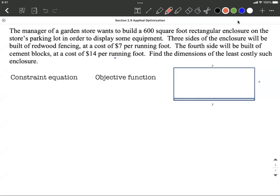Let's try an applied optimization problem. On this one, a garden store wants to build a 600 square foot rectangular enclosure on the store's parking lot in order to display some equipment. We know three sides of this enclosure will be built from redwood fencing at a cost of $7 per running foot. The fourth side is going to be cement blocks at $14 per running foot. Our goal is to find the dimensions of the least costly enclosure.